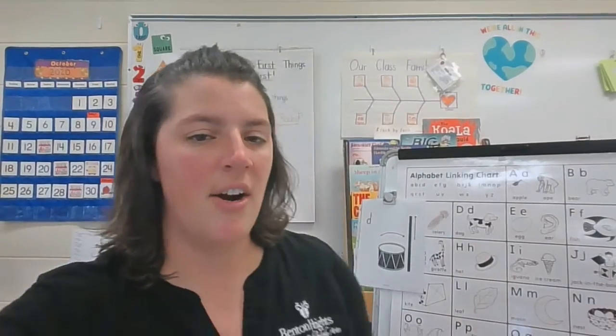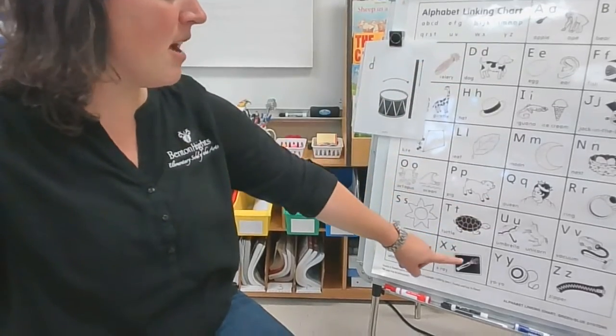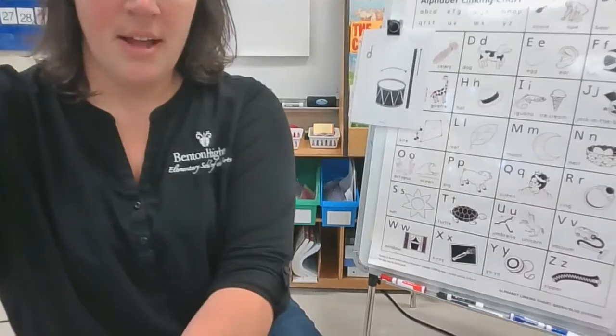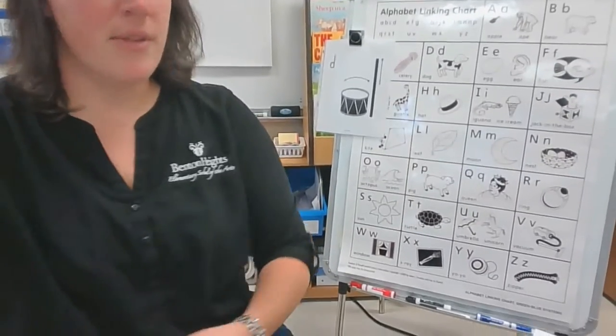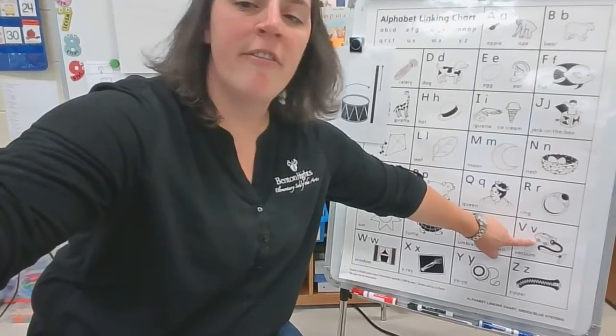Let's find it on our alphabet chart. This is another letter where we have to look down towards the bottom of the alphabet. Do you know what picture that is? You probably have one of these at your house, but it might not look like this. This is a vacuum.